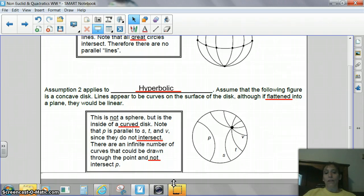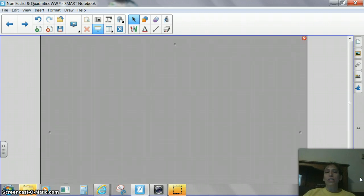All right. There are an infinite number of curves that can be drawn through the point and not intersect point P. So, again, I'll show you some more examples of that tomorrow. I just want to kind of get you used to knowing what these different types are because I have a feeling you may see them again. All right. Now, let's change gears and go to quadratic function.